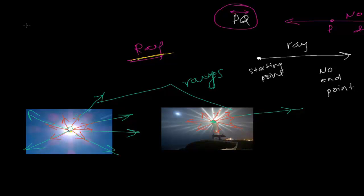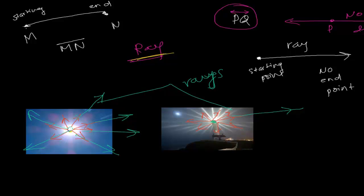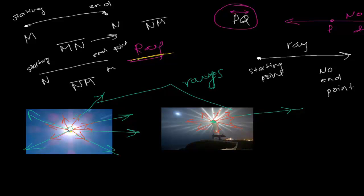In a line segment, the first letter written represents the starting point and the last letter represents the end point. For example, if you write line segment AM, then M is the starting point and N is the end point. If you write it as NM, then N is the starting point and M is the end point.